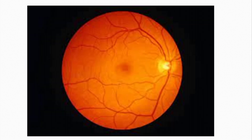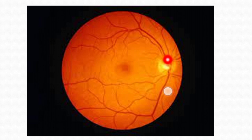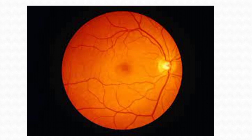Dark adaptation response has two components. First, it occurs in the cones, especially in the foveal region — it occurs rapidly but is small in magnitude. After that, dark adaptation occurs in the peripheral portions of the retina in the rods. This occurs slowly but is large in magnitude.